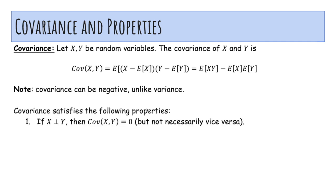So covariance satisfies the following properties. If X and Y are independent, then the covariance is zero, because earlier we proved that if X and Y are independent, then the expected value of the product is the product of the expected values. The covariance of X and X is E of X squared minus E of X times E of X, which is just the variance of X.